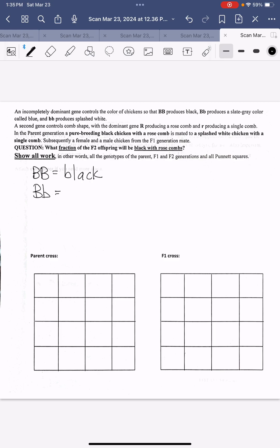Big B, little b produces a slight gray color called blue, and little b, little b produces a splashed white color. A second gene controls comb shape with the dominant gene R producing a rose comb.